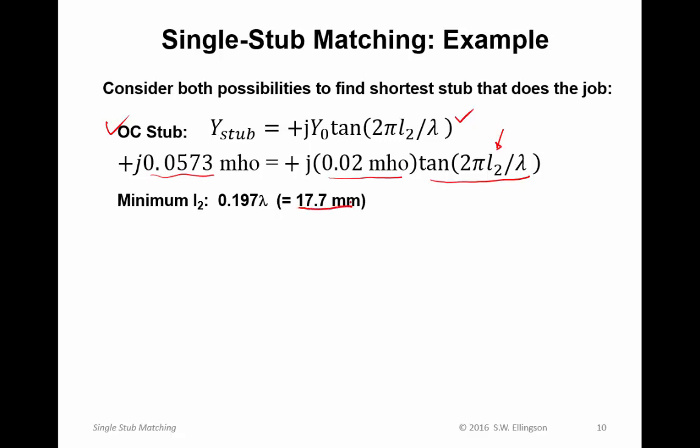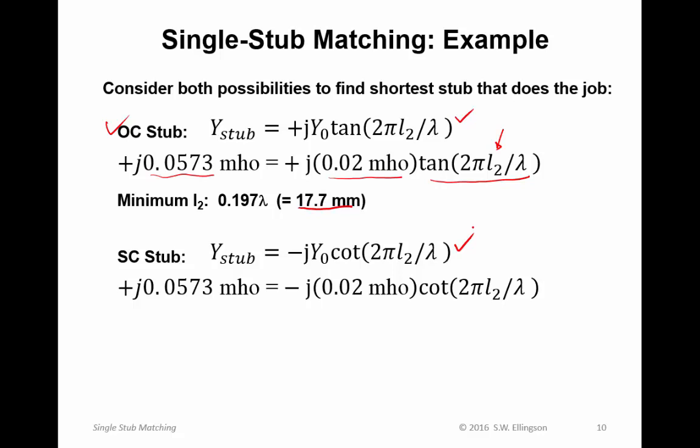The other possibility, I can use a short circuited stub. For a short circuited stub, the stub admittance is given by this expression. When I substitute values, I get this equation. I want to solve for L2. When I solve for L2, I find the smallest value that satisfies that equation is 0.447 wavelengths, which is 40.2 millimeters. So the open circuited stub wins in this case because this is shorter, and it meets the requirements.